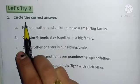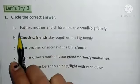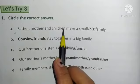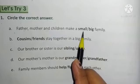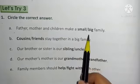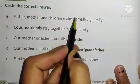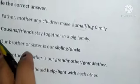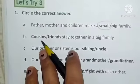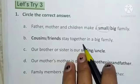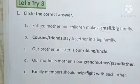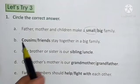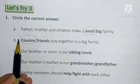Number one: circle the correct answer. A — father, mother, and children make a dash family. Small or big? Yes, small family. So we will circle on small. Next, number B — cousins or friends stay together in a big family. In a big family, who lives with us? Cousins or friends? Yes, cousins. So we will circle on cousins.